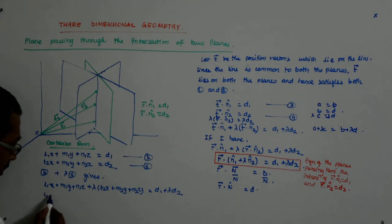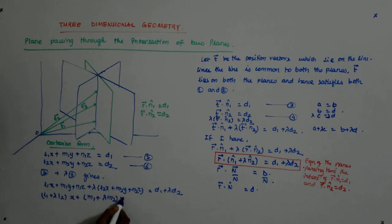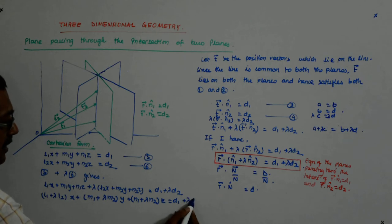L1 plus lambda L2 x plus M1 plus lambda M2 y plus N1 plus lambda N2 z is equal to D1 plus lambda D2, correct?